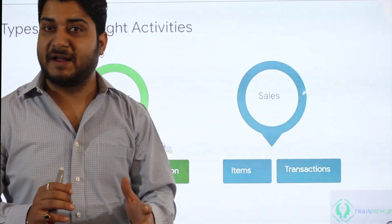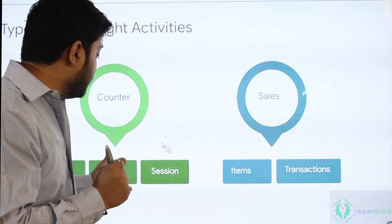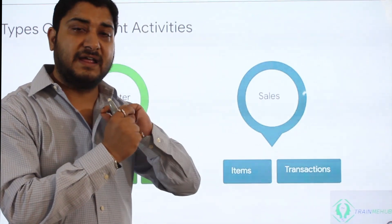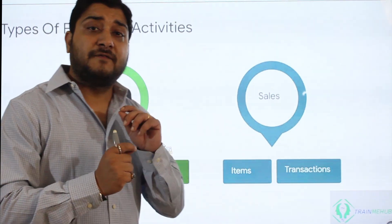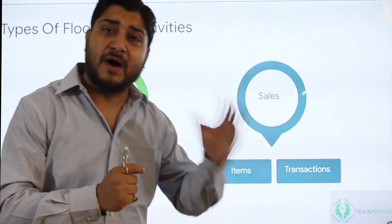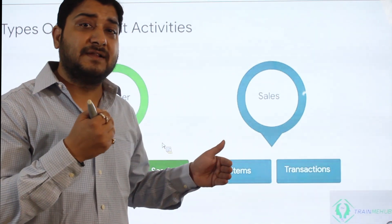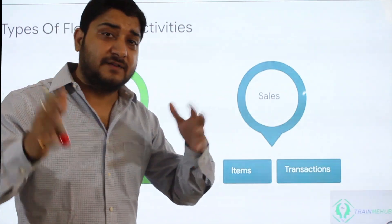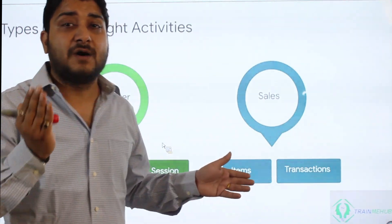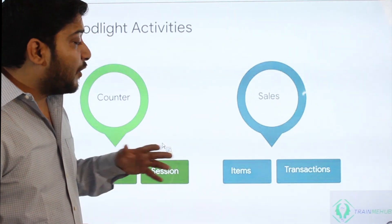For the counter type: standard floodlight fires every time a user lands on the platform, whether a website or app. Unique defines certain parameters to ensure that a unique user is counted only once within a defined time period, such as 24 hours. Session floodlight fires once per session — a session can be 30 minutes or one hour. Once the session expires, if the same user returns, the floodlight fires again. But if the user returns within that session window, the tag will not fire.